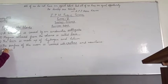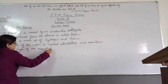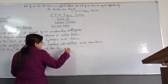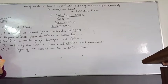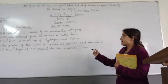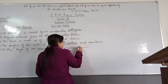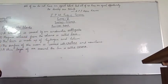Number five: A thin layer of air around the sun is called dash. Our earth also has a thin layer of air which is called atmosphere, and similarly the sun also has a thin layer of air which is called corona — C-O-R-O-N-A. So number 5 is corona.